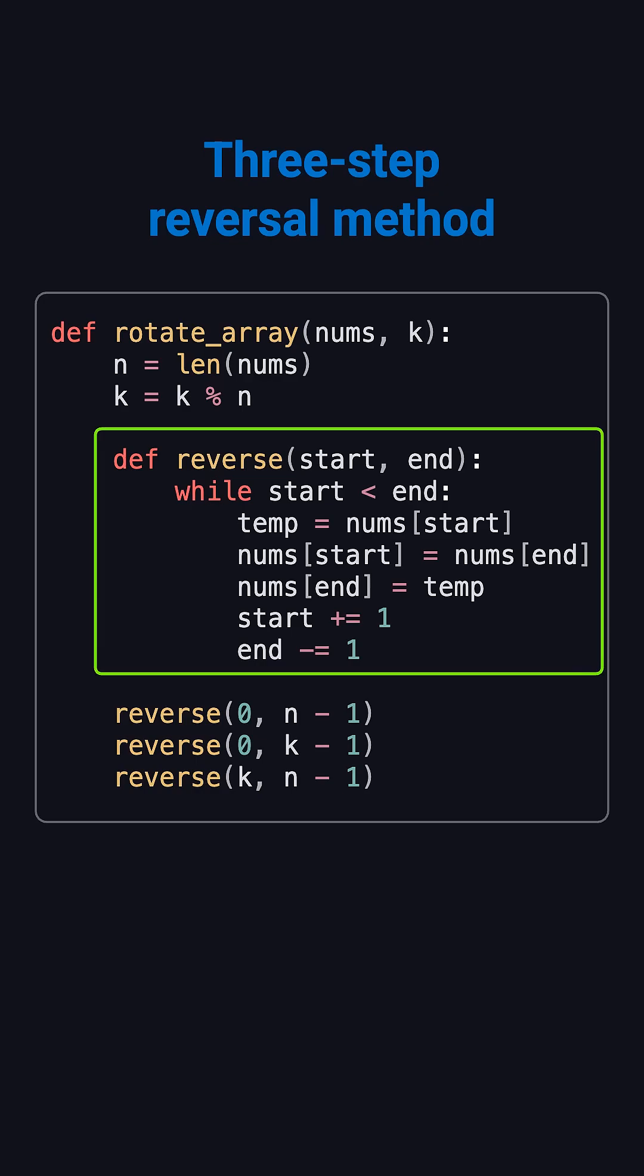Then we define a simple reverse function that uses two pointers to swap elements. After that, we perform three reversals: first the whole array, then the first k elements, and finally the rest.